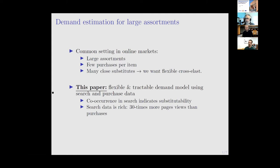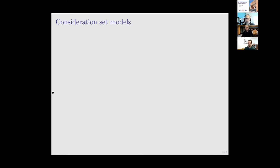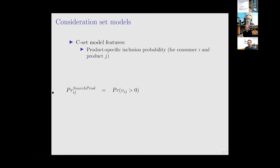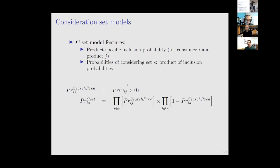I'll explain how we operationalize bringing search data into the demand model in a micro-founded and consistent way. We draw on an established literature on consideration sets, thinking about the search process at the individual product level. There's a probability of an individual product being included in the consideration set of a particular consumer - denoted as probability ij - that depends on a function vij. Given these individual product components, the probability of a set occurring is the product of individual inclusion probabilities.